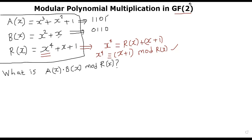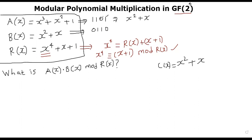Then we right shift a by one position — that means dividing each term of a by x. So our current result c(x) = x² + x. No modular arithmetic has been applied yet. Next, I take a and right shift by one position, so this new a becomes x² + 1 (the trailing 1 of the original shifts away and bits move down). For b, we do a left shift by one position, so b becomes x³ + x². Since x³ is still within GF(2⁴), that's fine.